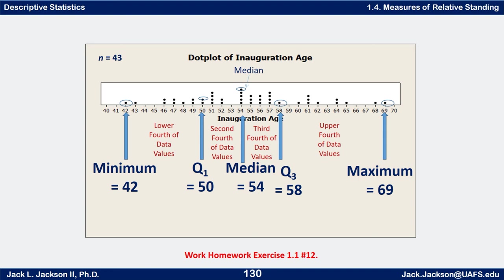To summarize how to compute quartiles: first, put the data in increasing order. Take the lowest value — that's Q0, also called the minimum — and the highest, Q4, also called the maximum. Then take the one in the middle of the ranked list — that's the median, also known as Q2. Q1 or the lower quartile is the median of the lower half, and Q3 is the median of the upper half.